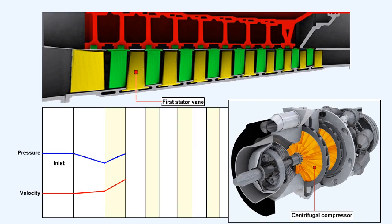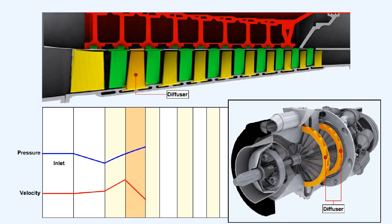Essentially then, the rotor stages of an axial flow compressor can be seen as doing the same job as the impeller in a centrifugal compressor. While the stator stages of an axial flow compressor can be compared to the diffuser in a centrifugal compressor.